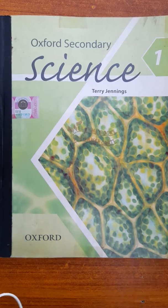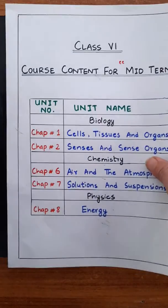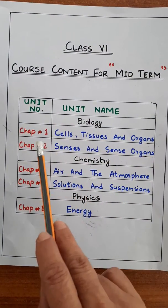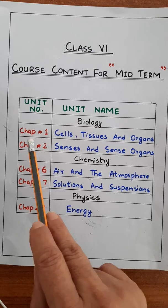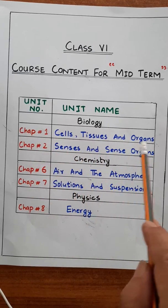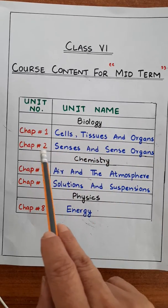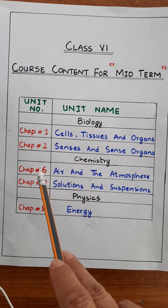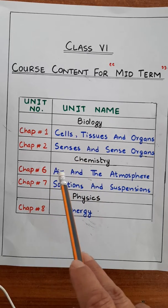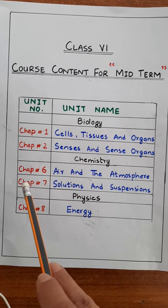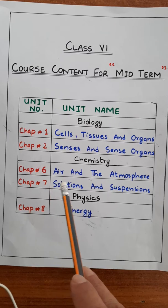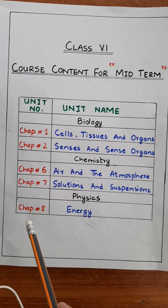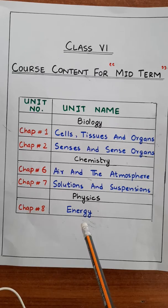Before starting my lecture, I just want to tell you about the course content for the midterm. The midterm course includes the biology portion: chapter number one, Cell Tissues and Organs; chapter number two, Sense and Sense Organs. The chemistry portion includes chapter number six, Air and the Atmosphere; chapter number seven, Solutions and Suspensions. From the physics portion we have chapter number eight, Energy.